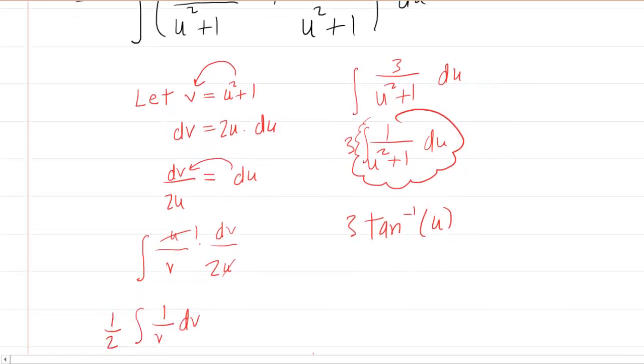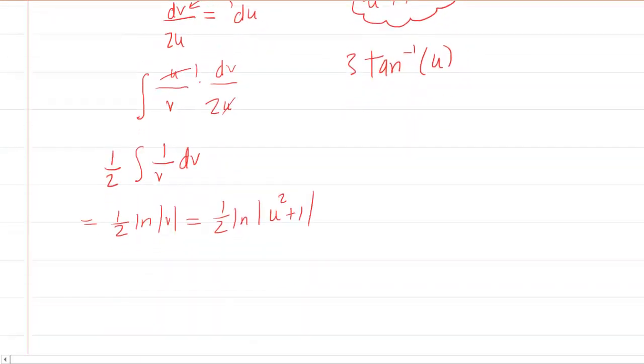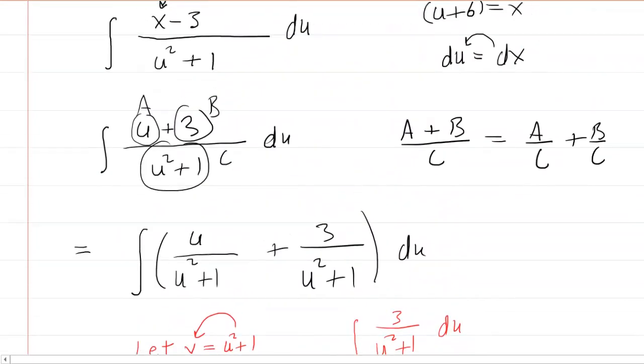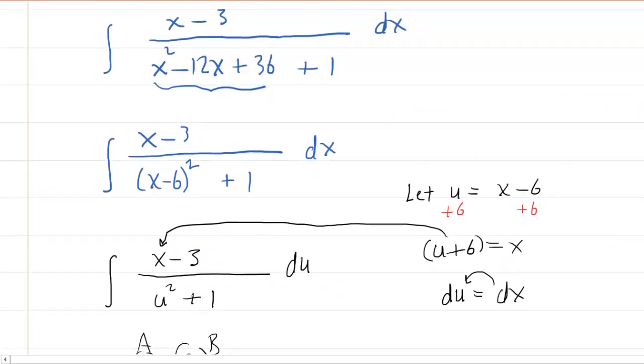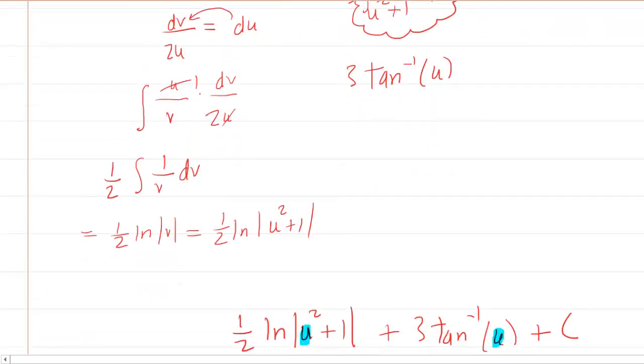So with that in mind, we can actually put these back together to create the final integral: one half times the natural log of u squared plus one and then plus three times the arc tangent of u. Don't forget your constant of integration. And also let's not forget that the u needs to be replaced with the very original substitution that we made. We had said that u was equal to x minus six.